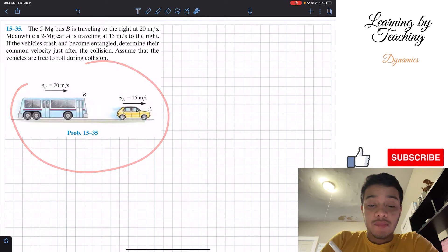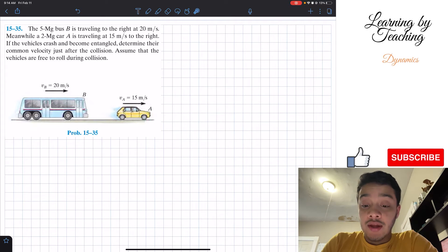Alright, so we're given the figure. We've got the bus B traveling at 20 meters per second, and we're also given this little car A that is traveling at 15 meters per second.